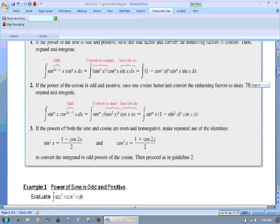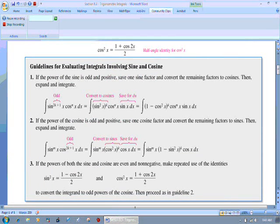So if we look back at the guidelines on the previous page, we notice here in guideline number two that if the power of cosine is odd and positive, we would want to save a cosine factor and convert everything else over to sines.